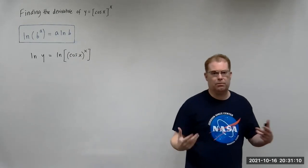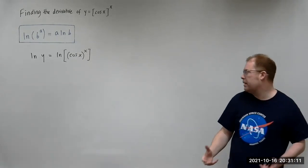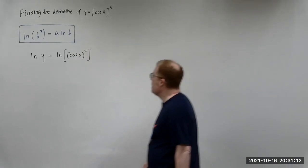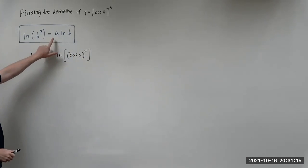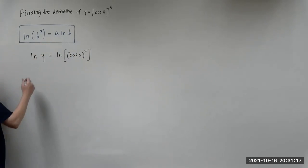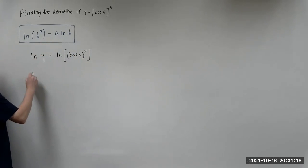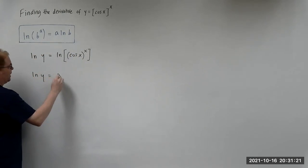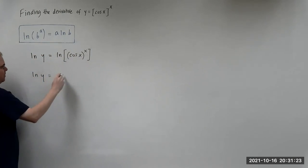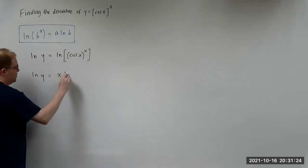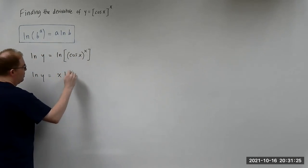Taking the natural log of both sides, we can now utilize the log property. This gives us natural log of y equals x — bringing the x down in front — times the natural log of cosine of x.